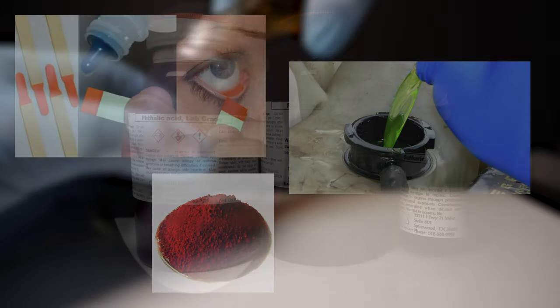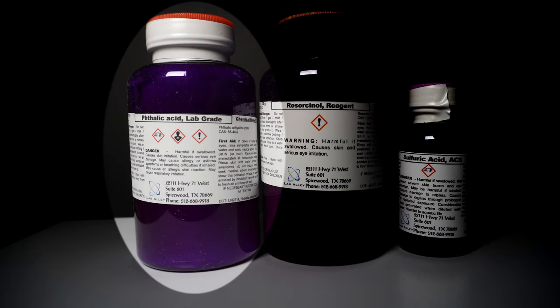But enough on that, let's get started. The three main starting materials I am using are phthalic anhydride, which is commonly used in the production of dyes, resins, and plastics.